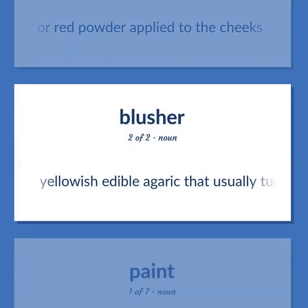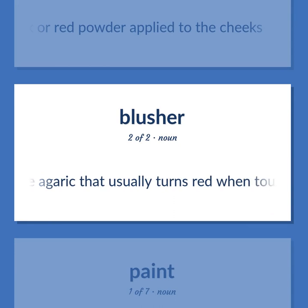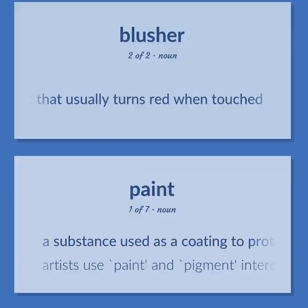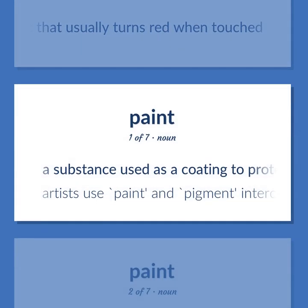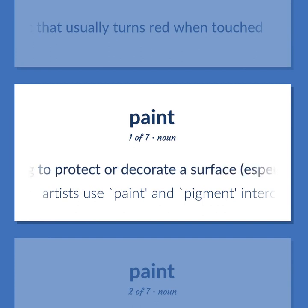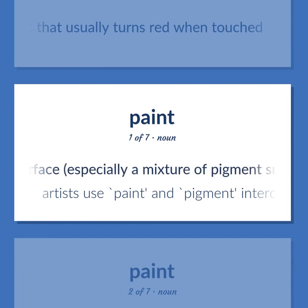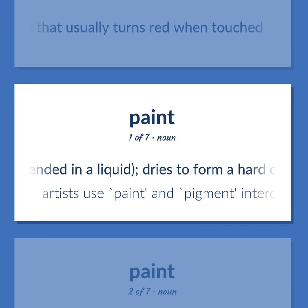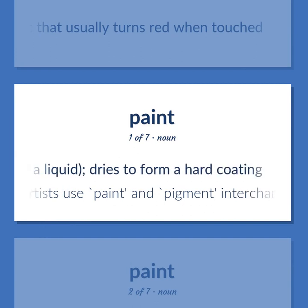Rouge also refers to a yellowish edible agaric that usually turns red when touched. Paint: a substance used as a coating to protect or decorate a surface, especially a mixture of pigment suspended in a liquid that dries to form a hard coating. Example: Artists use paint and pigment interchangeably.